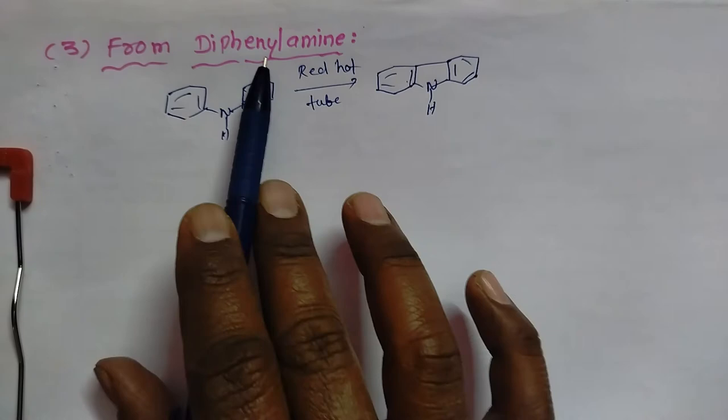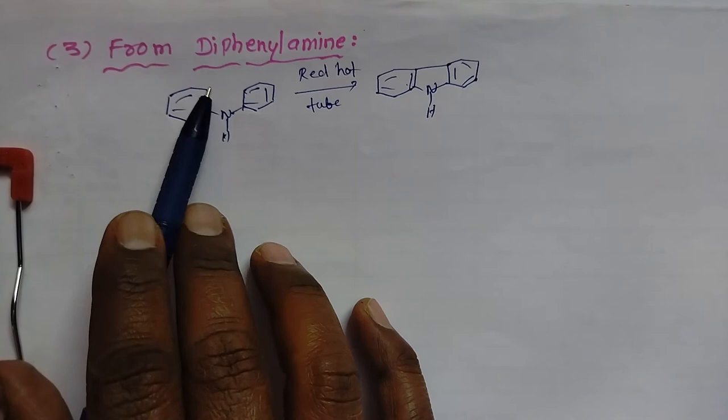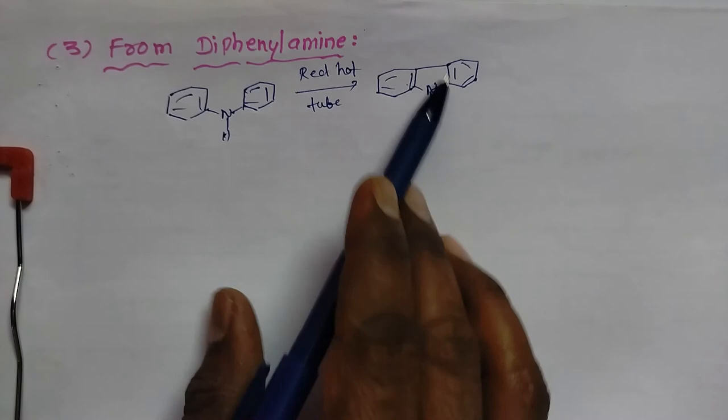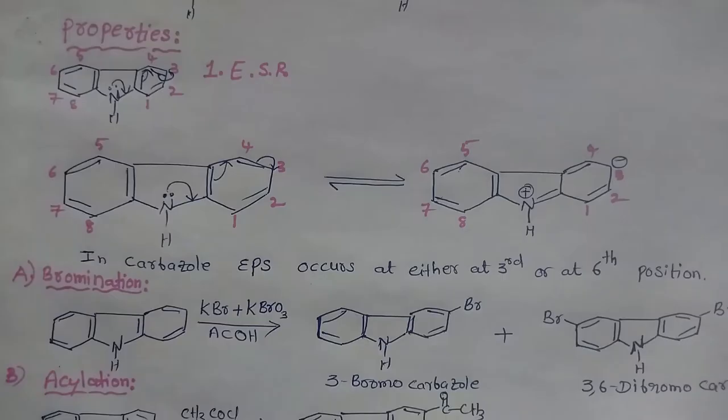The third preparation method uses diphenylamine. When diphenylamine is passed through a red-hot tube, dehydrogenation occurs — one hydrogen from one ring and another hydrogen from the other ring are removed. As a result, cyclization takes place and we get carbazole.